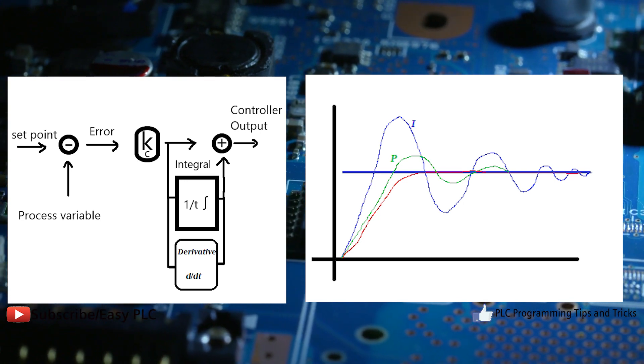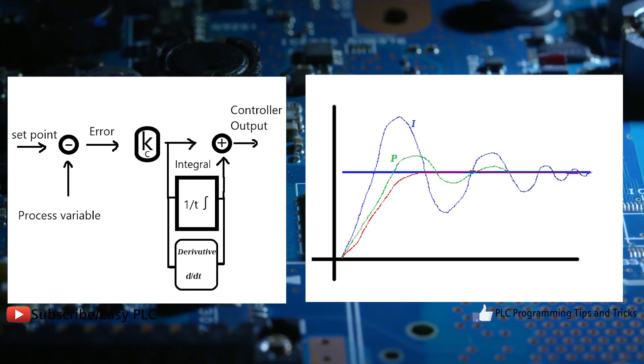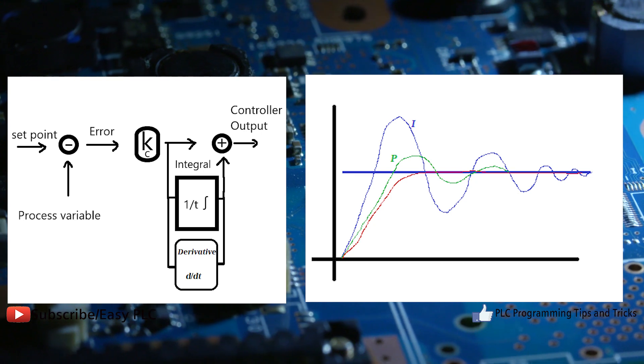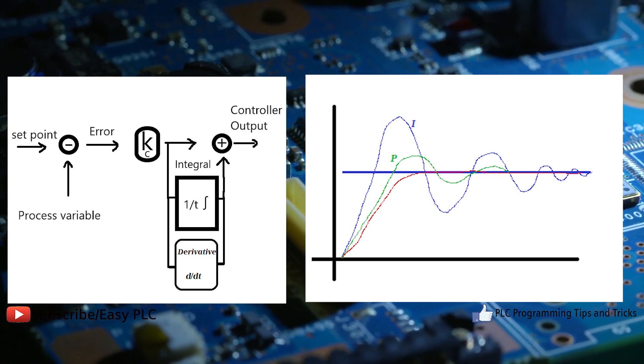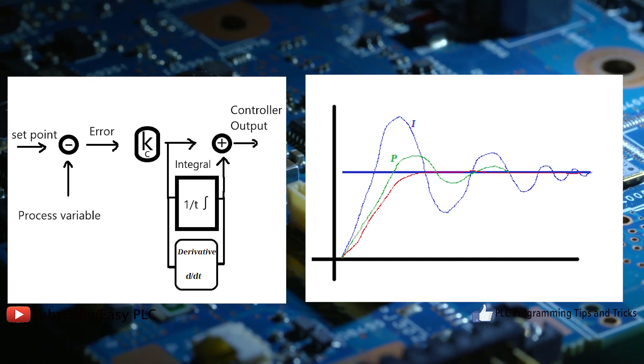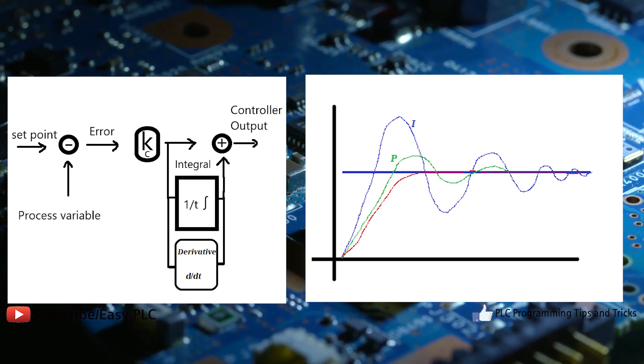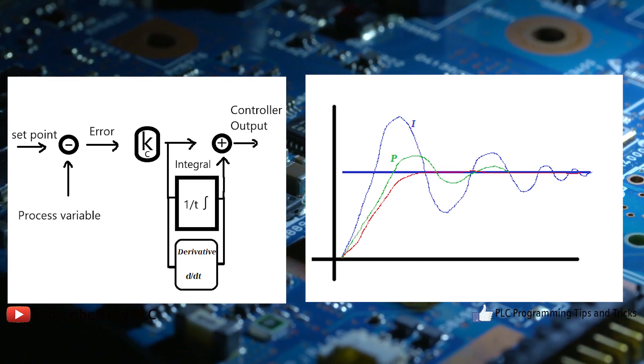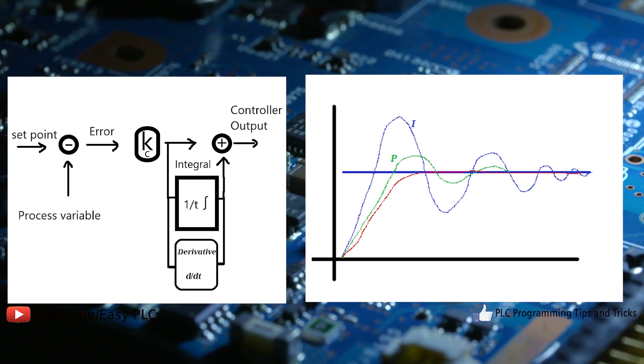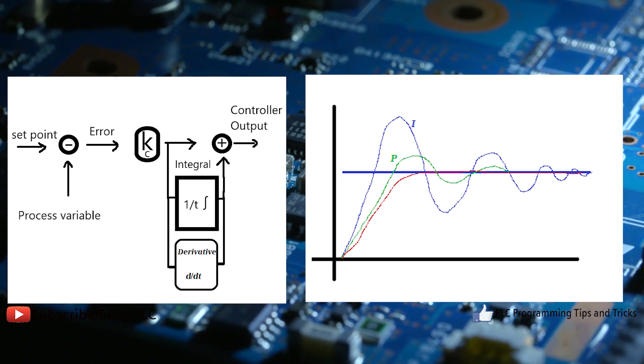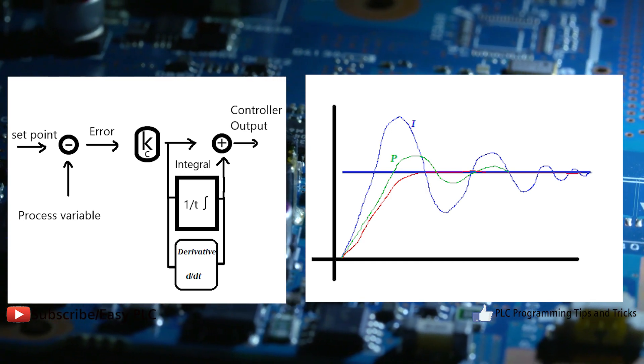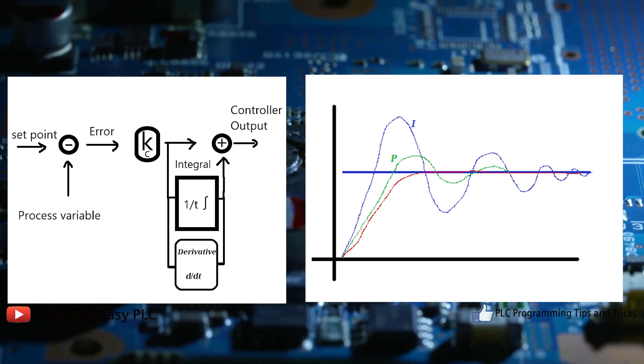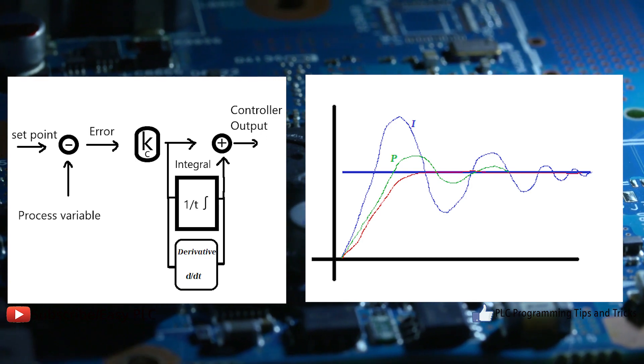PID controller response: In the above figure, response of D controller is more compared to PI controller and also settling time of output is decreased. It improves the stability of system by compensating phase lag caused by I controller. Increasing the derivative gain increases speed of response.